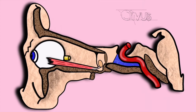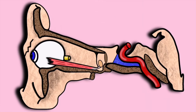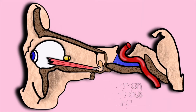Lateral to the clivus on either side you will find the foramen lacerum. In this view you can also see the course of the internal carotid artery as it passes through the cavernous sinus. Moving anteriorly we find the common tendinous ring, also known as the annular tendon, which forms the common attachment site for the four rectus muscles of the eye.